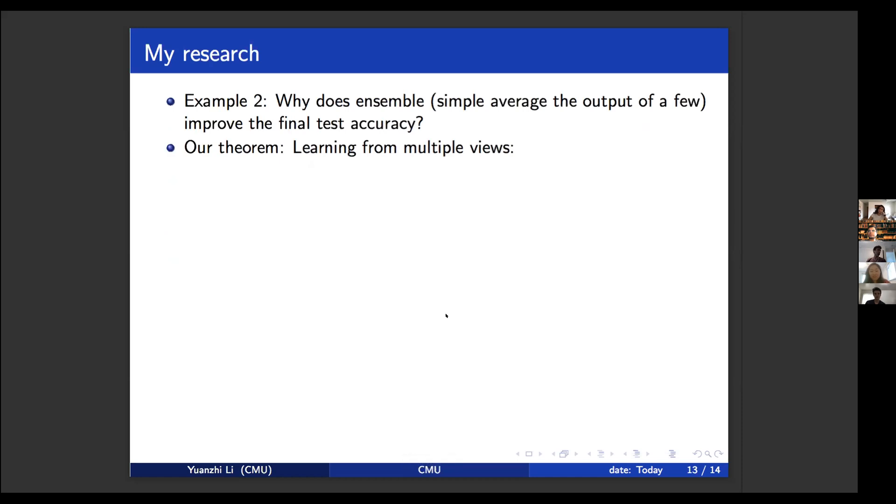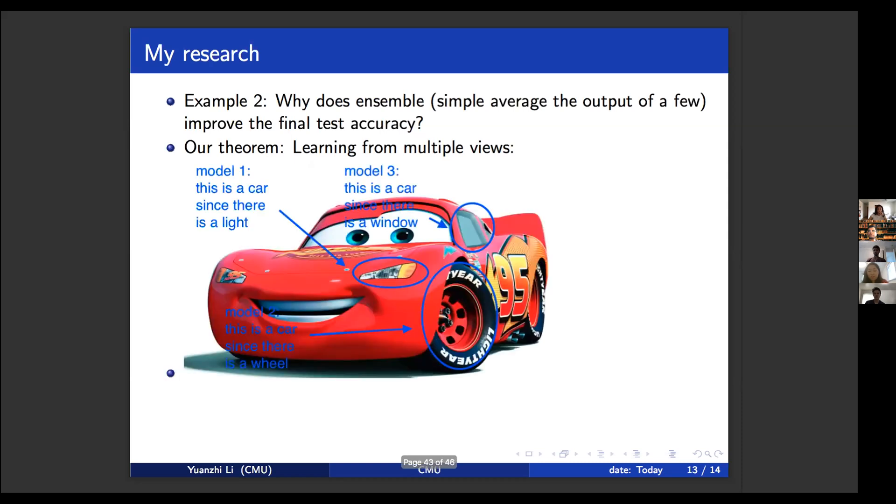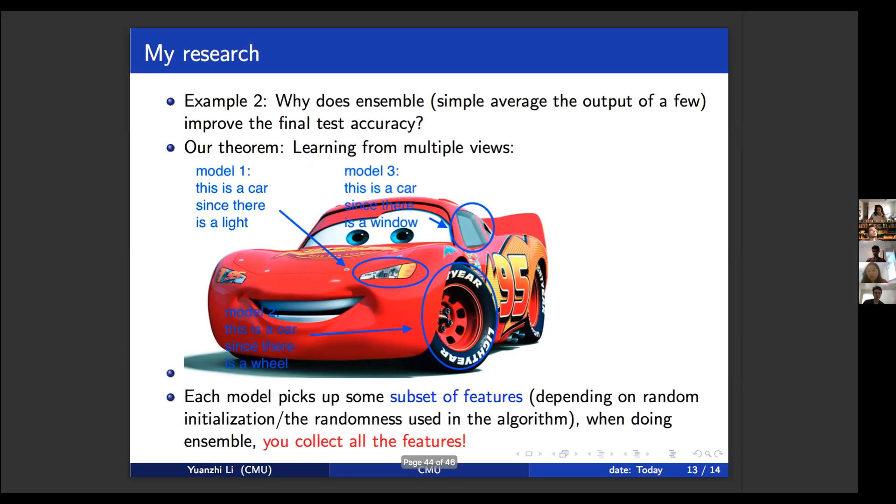So basically in the past years, we have developed theorems showing how ensemble works by learning from multiple views. In particular, your data set, for example, your vision data set, you usually can classify images using any of these signals. For example, you can say this is a car because there's a light. This is a car because there's a wheel. This is a car because there is a window. You can classify the data, most of the data using any of these views.